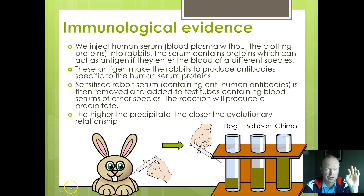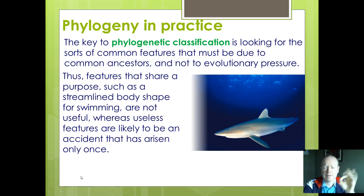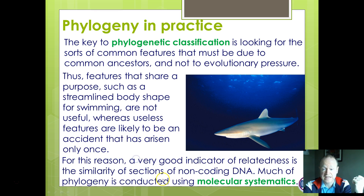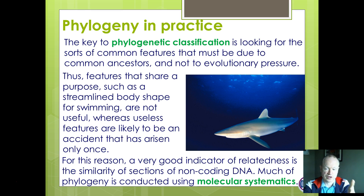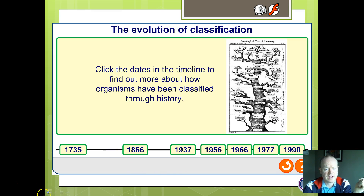When putting phylogenetics into practice, you need to think about features that have arisen from a common ancestor rather than features that look similar due to convergent evolution. The best evidence comes from DNA — looking at similarities rather than external features — because external features can be misleading. For example, dolphins and sharks look fairly similar but have evolved from very different origins, so just because they've got similar features doesn't put them in the same category.